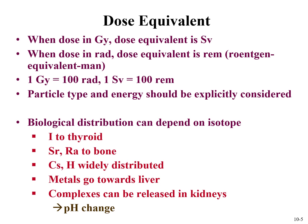The biological distribution of an isotope is also an important consideration when evaluating internal dosimetry. For example, iodine collects in the thyroid. Calcium in the bone means that divalent metal ions such as strontium and radium go to the bone. Metal-ligand complexes going through the kidney experience a pH decrease, so complexes can be released and metal ions released at lower pH — these will have different effects on different parts of the body. Models from the National Council on Radiation Protection describe how different radionuclides behave in the body, and this also affects annual limits on intake.